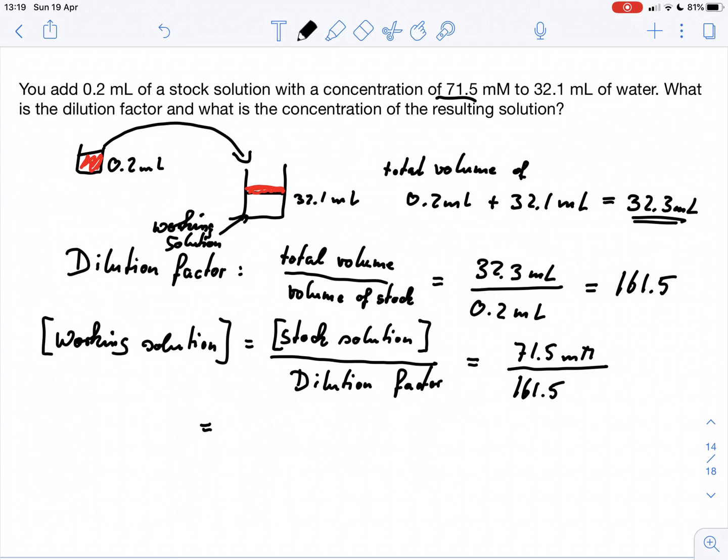So here we get 0.44 millimolar for our working solution. So this is how you can calculate a dilution factor and the resulting concentration of the diluted solution, just by simply taking the stock solution divided by the dilution factor. I hope this makes sense and thank you for watching.